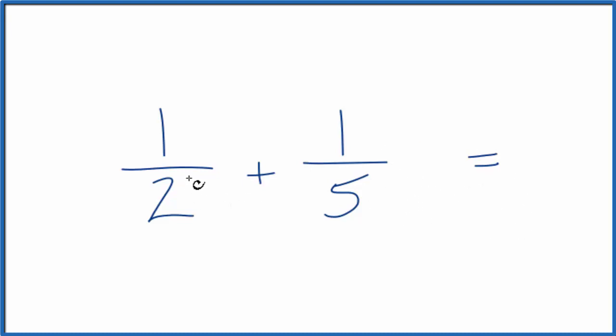So first off what we need to do is we need to get a common denominator, get these to be the same numbers without changing the value of each one of these fractions here.